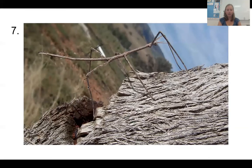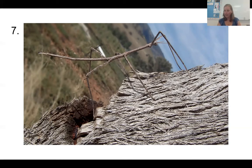Here you see a walking stick insect. They're excellent with camouflage, as you can imagine. The primary predator of this insect is a bat, because bats use echolocation and are not tricked by the camouflage — they can still pick them up, so that is the number one predator of this animal.